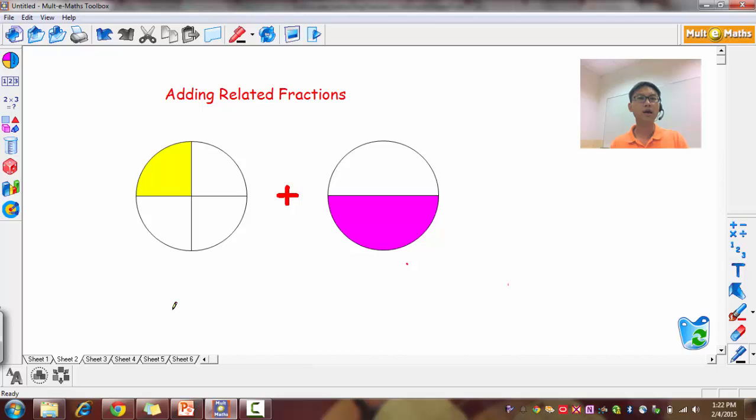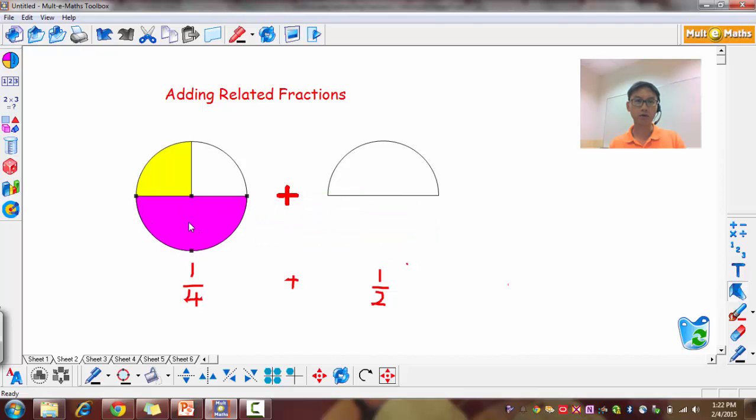So let's take a look at related fractions. I have this fraction, 1 quarter plus half. Now I can't really add them together because my denominators are not the same. But if I were to shift my half and join it up, because adding is about joining, what do you notice? You actually notice that this becomes 3 quarters.